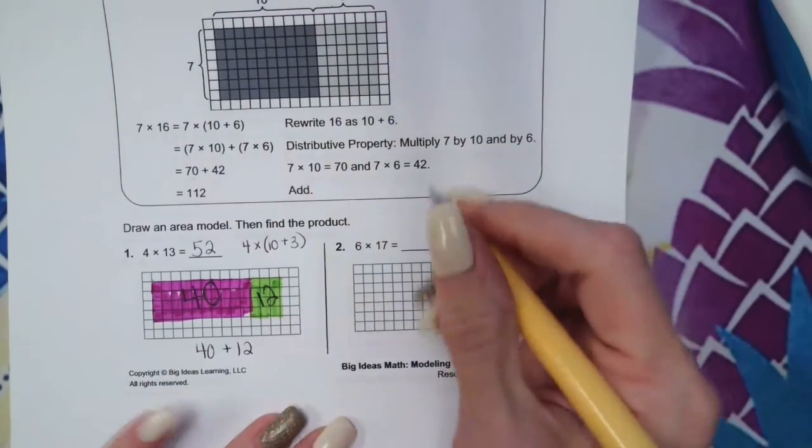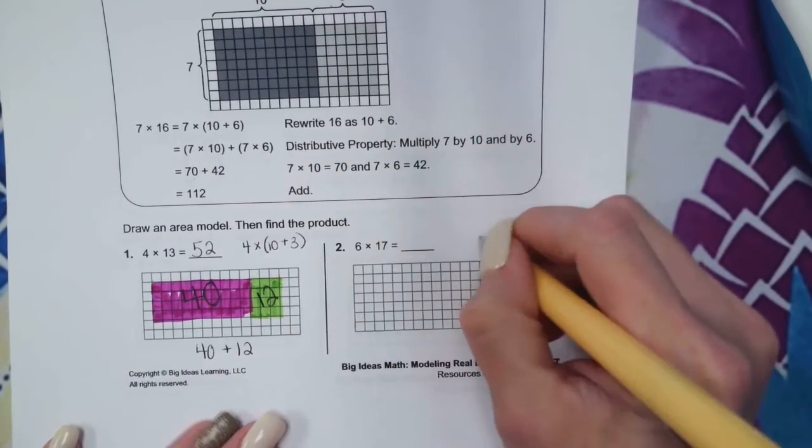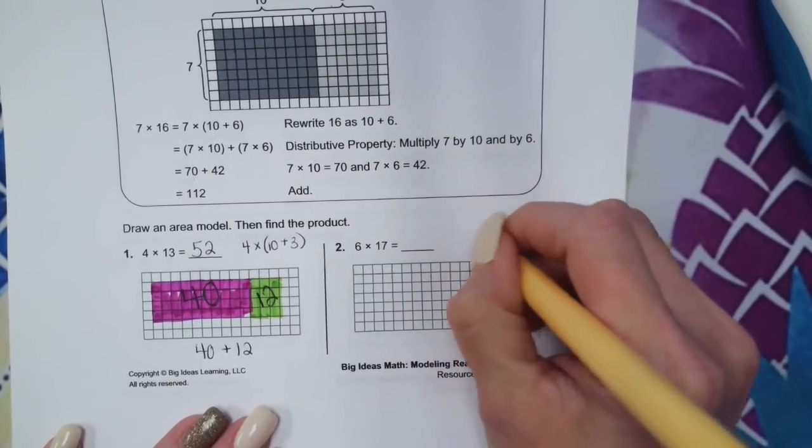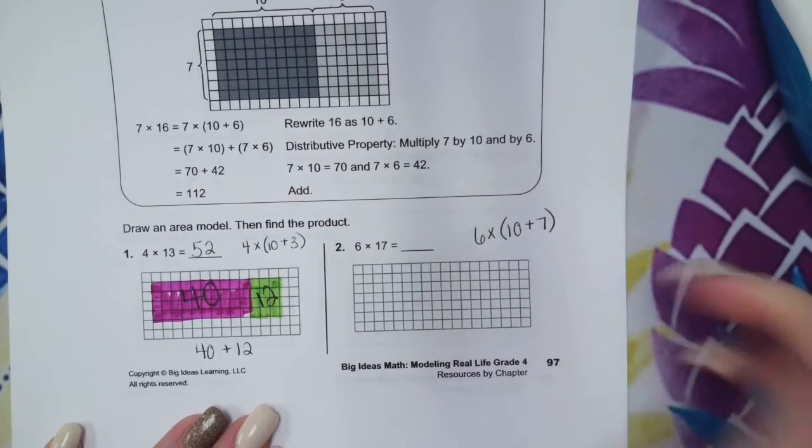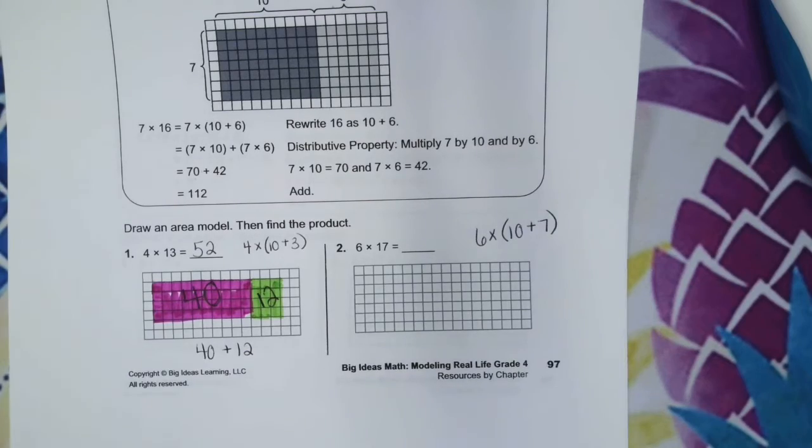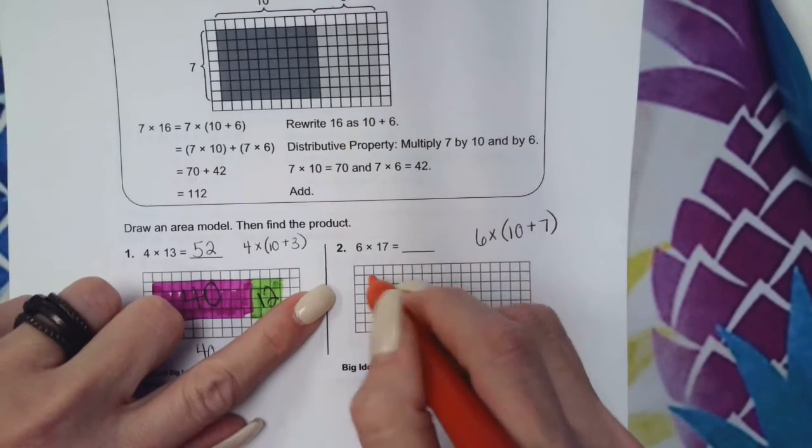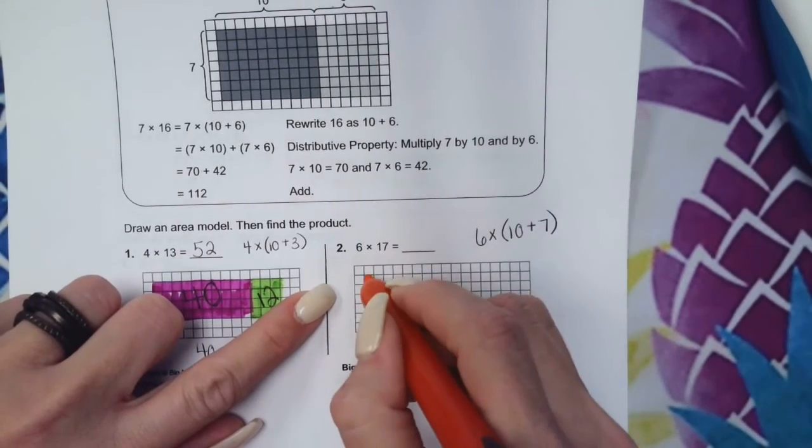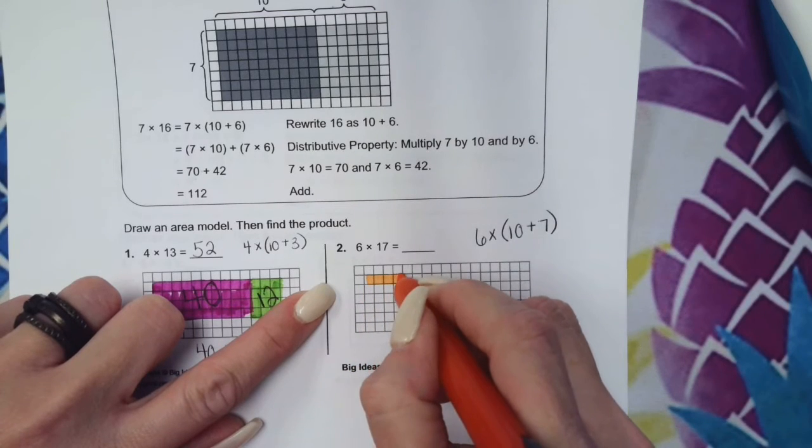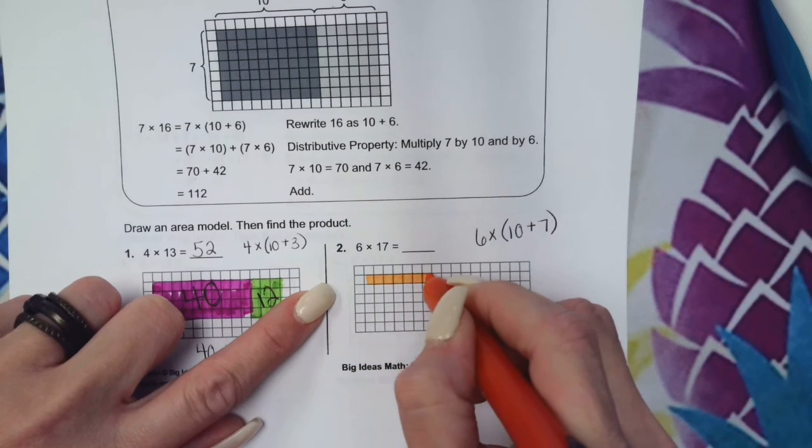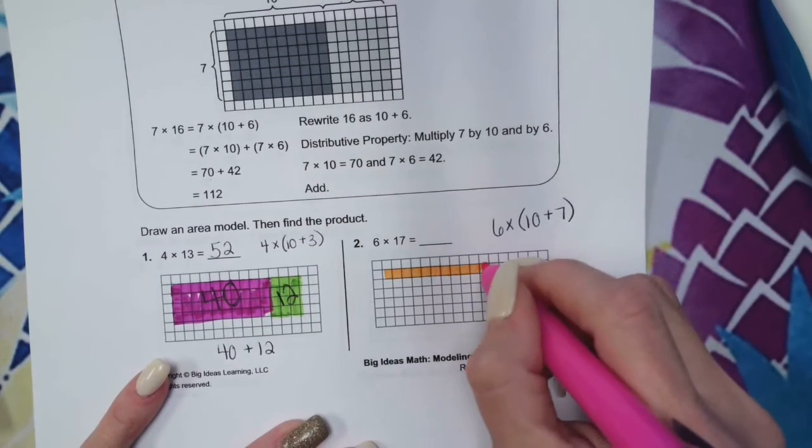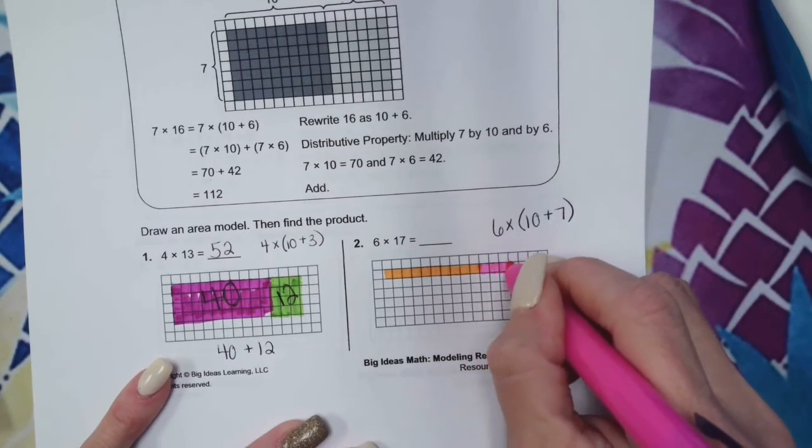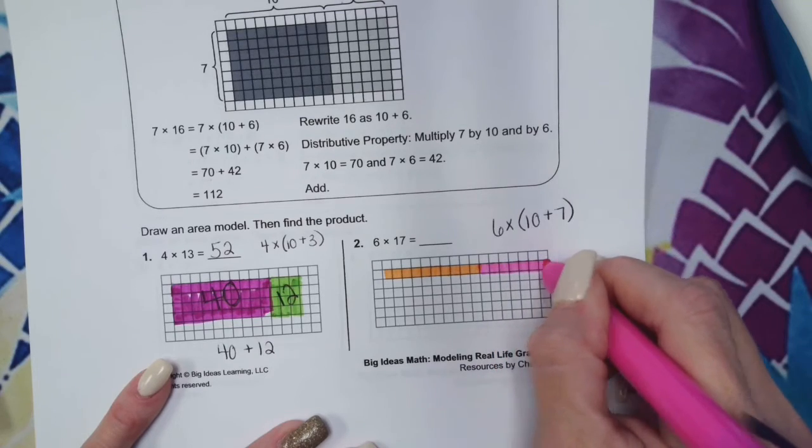All right, so let's look at 6 times 17. How would we break apart 17? Good, 10 plus 7. So one section of my rectangle needs to be 10: 1, 2, 3, 4, 5, 6, 7, 8, 9, 10. And the other section needs to be 7: 1, 2, 3, 4, 5, 6, 7. And then it needs to be 6 units wide: 1, 2, 3, 4, 5, 6.